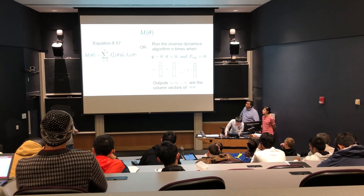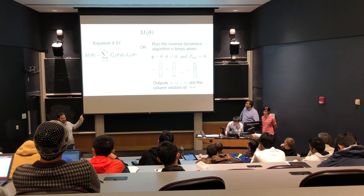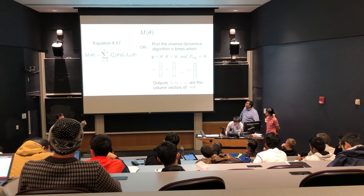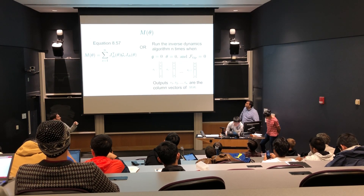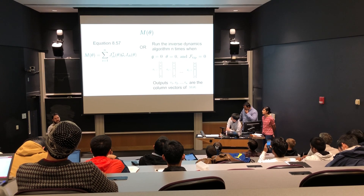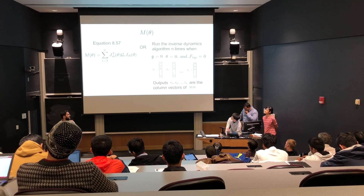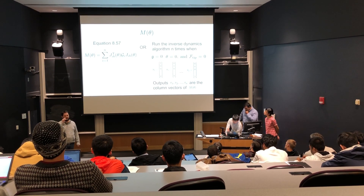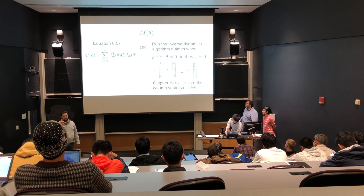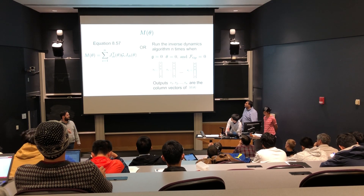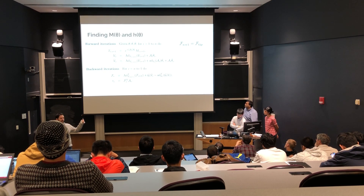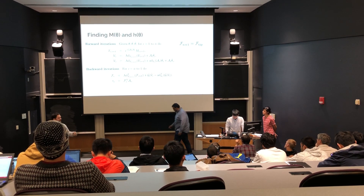To find the mass matrix M, we can either use equation 8.57 from section 8.4, or we can do it like in the quiz. You run the inverse dynamics algorithm with g, theta dot, and f-tip all set to zero, and you run it n times. Each time you change your theta double dot vector, setting the n-th element to one, and the output tau vectors are the column vectors of the mass matrix.